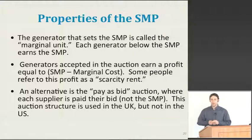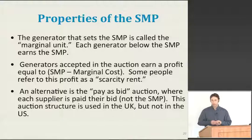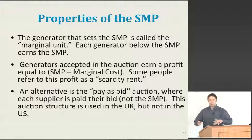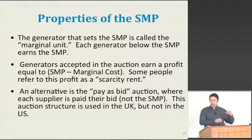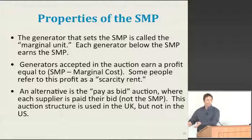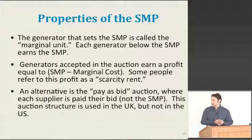There is a variation on the uniform price auction called the pay-as-bid auction, which is used in the United Kingdom but not in the United States. The idea behind the pay-as-bid auction is that there's still a system marginal price produced through the market, but rather than each generator earning the system marginal price, each generator that bids below what the system marginal price turns out to be is paid whatever their bid was.